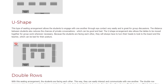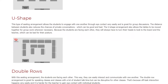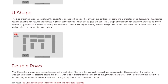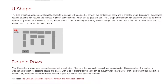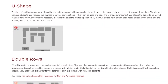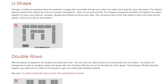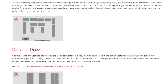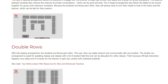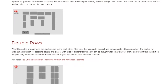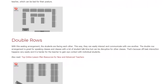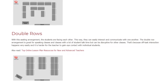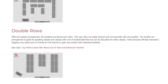Double rows: with this seating arrangement, the students are facing each other, so they can easily interact and communicate with one another. The double row arrangement is great for speaking classes and classes with a lot of student talk time, but can be disruptive for other classes. Off-task interaction happens very easily, and it is harder for the teacher to gain eye contact with individual students.